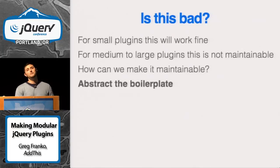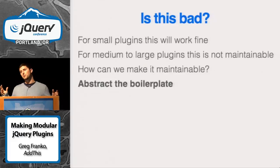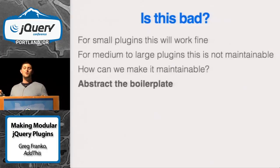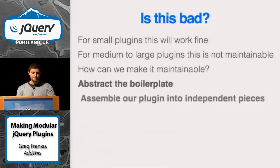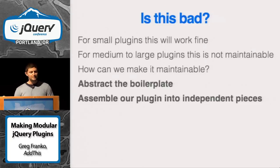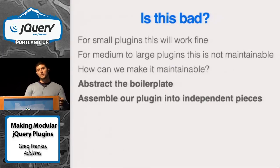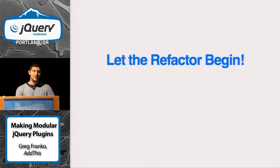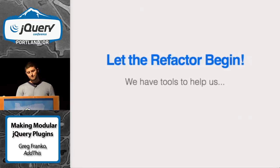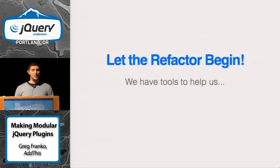How can we make it maintainable? For every jQuery plugin there's common boilerplate. This is really the year of removing boilerplate — just like 2012 was the year of the JavaScript MVSTAR framework, this is the year of removing boilerplate as much as possible. If we abstract the boilerplate and assemble our plugin into different independent modules or pieces, that's how we make it maintainable.